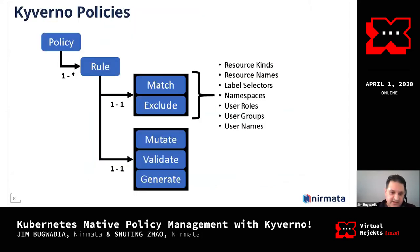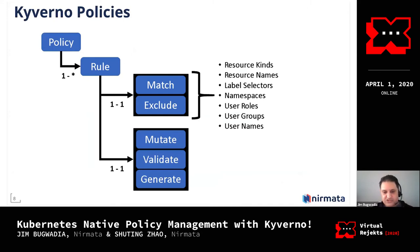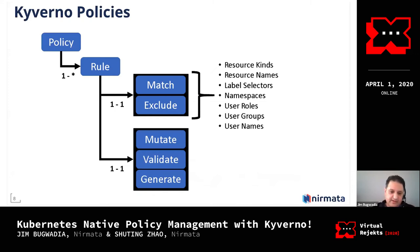Here's what a policy looks like at a high level. A policy is a set of rules. Each rule has a match or exclude block — you can have both. You can match resources based on kinds, names, label selectors, namespaces, even user groups and user roles. This is very powerful in terms of how you target policies. For example, you could apply a policy to all pods except users in the cluster-admin group, and then write a mutate, validate, or generate rule.